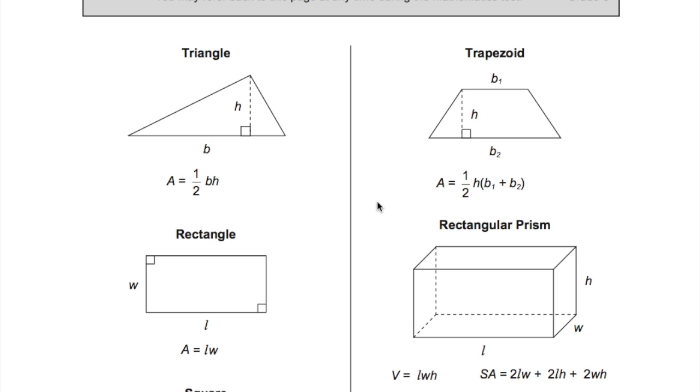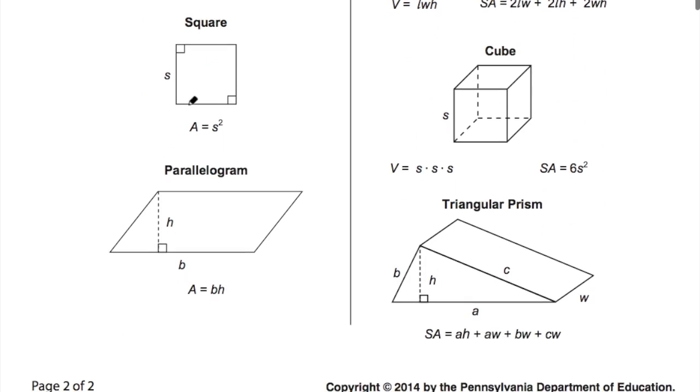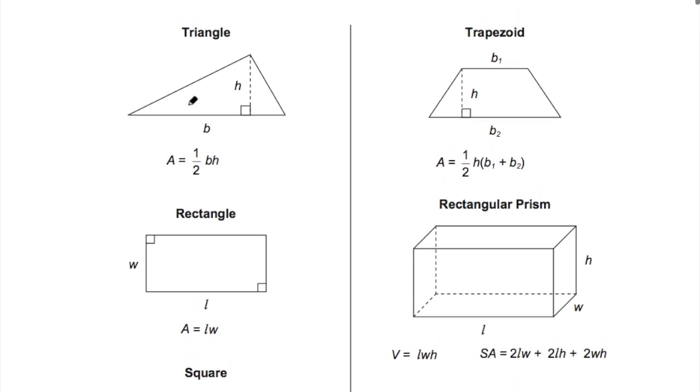Hello again, in this lesson we're going to be talking about the area of 2D shapes, specifically the triangle and four quadrilaterals: a rectangle, a square, a parallelogram, and a trapezoid.